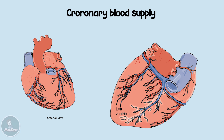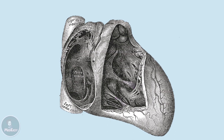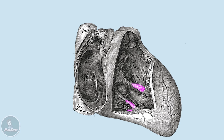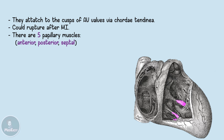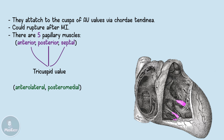The posterior descending artery supplies the posterior one-third of the interventricular septum, the posterior two-thirds of the ventricular walls, and the posterior medial papillary muscles. The papillary muscles are pillar-like muscles found within the ventricles only, not the atria. They attach to the cusps of the mitral and tricuspid valves via chordae tendineae and can rupture after myocardial infarction. There are five papillary muscles: anterior, posterior, and septal each support the three cusps of the tricuspid valve, while the anterolateral and posteromedial support the two cusps of the mitral valve. The anterolateral muscle has dual blood supply from the LAD and a branch of the circumflex, while the posteromedial has supply only from the posterior descending — therefore, in most patients it is the posteromedial papillary muscle that is at risk of rupture as a complication of MI.